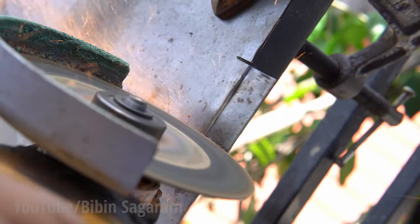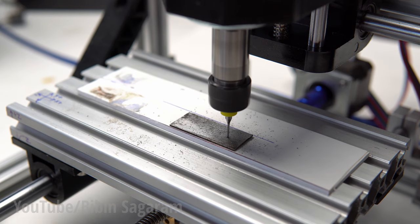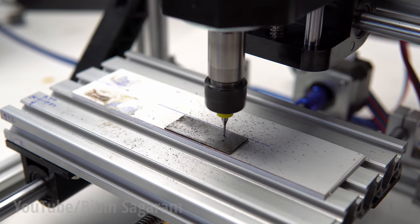A piece of high carbon steel is cut and fixed on the mini CNC to drill holes for the blade. After drilling the holes, the outline to cut the blade is engraved using an engraving tip.